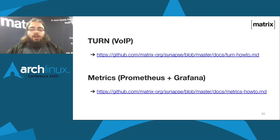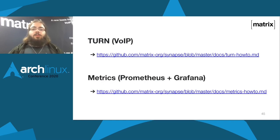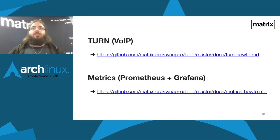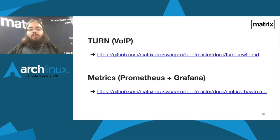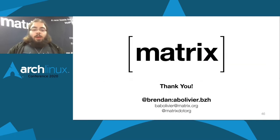A couple of other features worth looking into: you can set up a TURN server, which is very useful if you want to do VoIP behind NATs — Synapse supports this so you can give it a TURN server that it provides to clients. Another useful thing is metrics and monitoring with Prometheus and Grafana. There's a lot of info in the docs, and we also provide the JSON for a Grafana dashboard you can use. And that's it for me — thank you for listening to me rambling about Matrix and servers. If you've got questions, I'll be there in the Q&A.